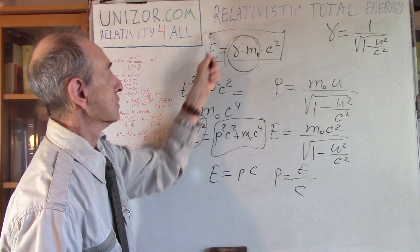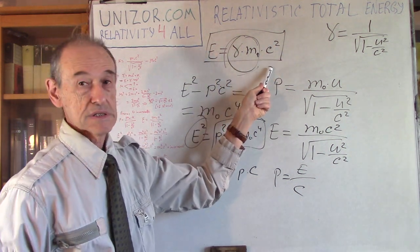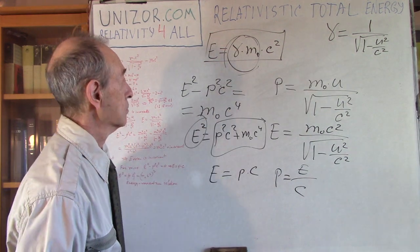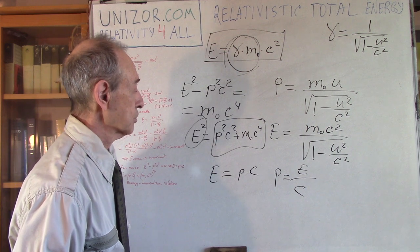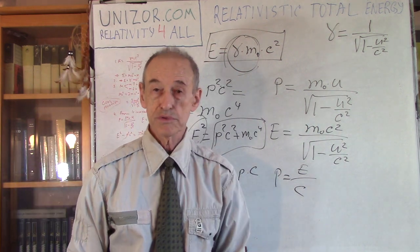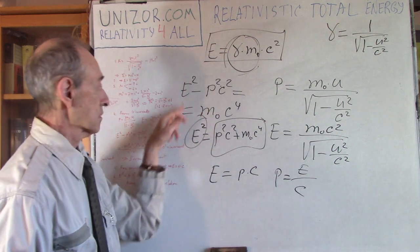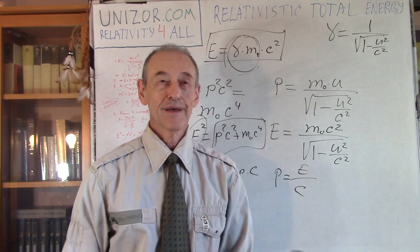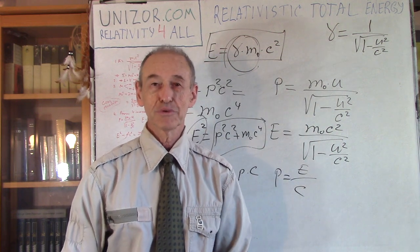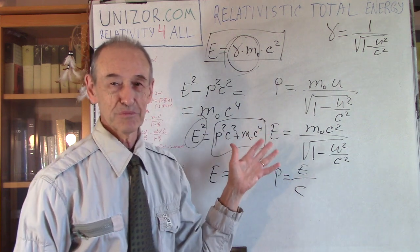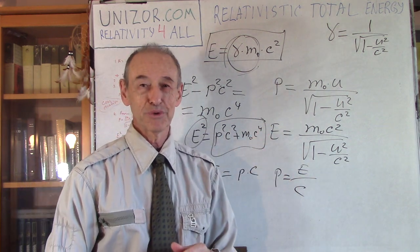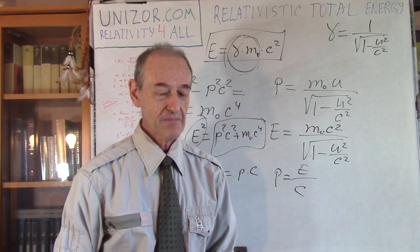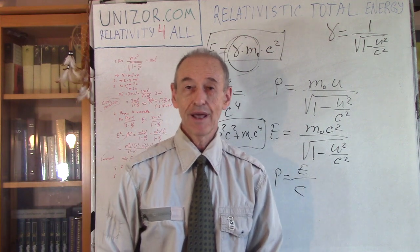These are basically all the things I wanted to talk about, and the most important result of this lecture is E equals gamma m0 c squared, where gamma is the Lorentz gamma factor. I do recommend you to read the notes for this lecture — the algebra is in the notes, and I think it's more satisfying to see it with your own eyes rather than just believing me. Okay, that's it for today, thank you very much and good luck.